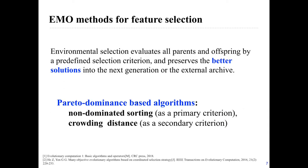For environmental selection, we evaluate parents and offspring using a predefined selection criterion, then select a certain number of solutions to enter the next generation or the external archive. Normally two concepts are used: non-dominated sorting and crowding distance. The EMO-based method uses non-dominated sorting to rank solutions into different ranks, then uses crowding distance to select solutions within each rank. In this work, we are focused on crowding distance.